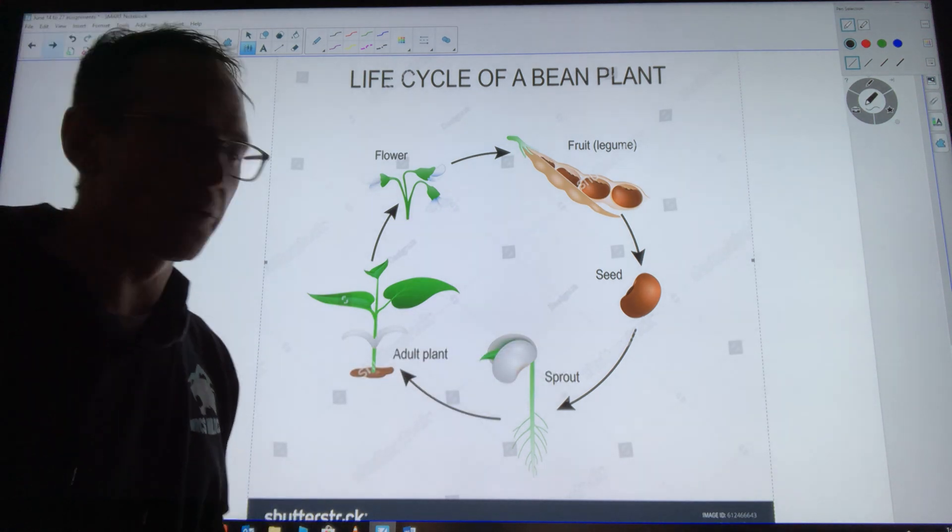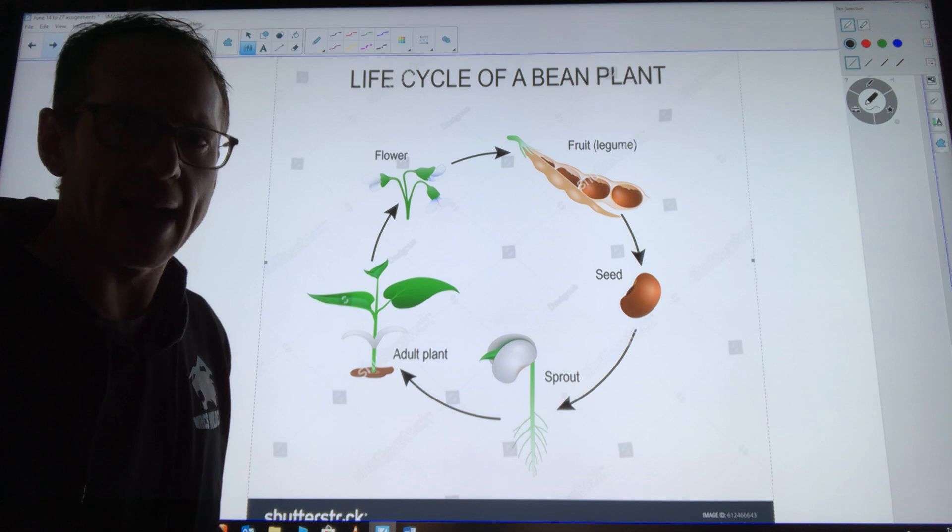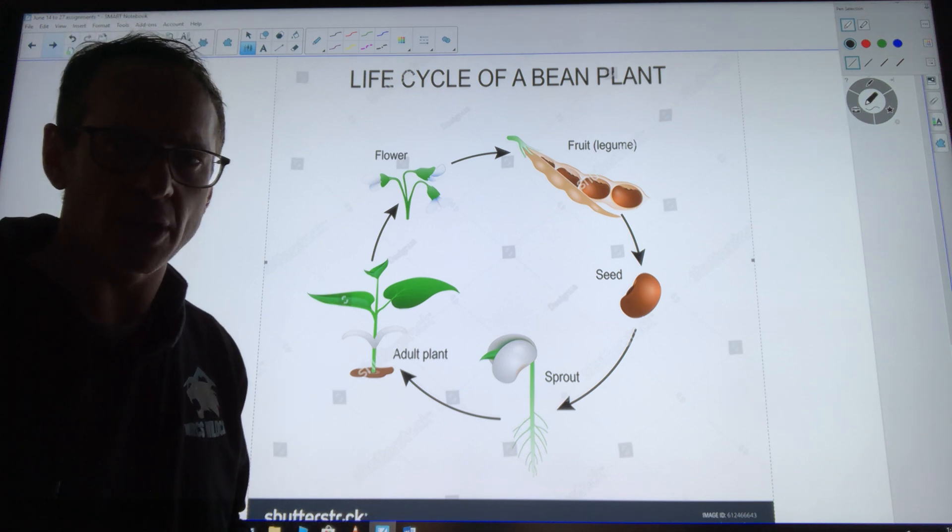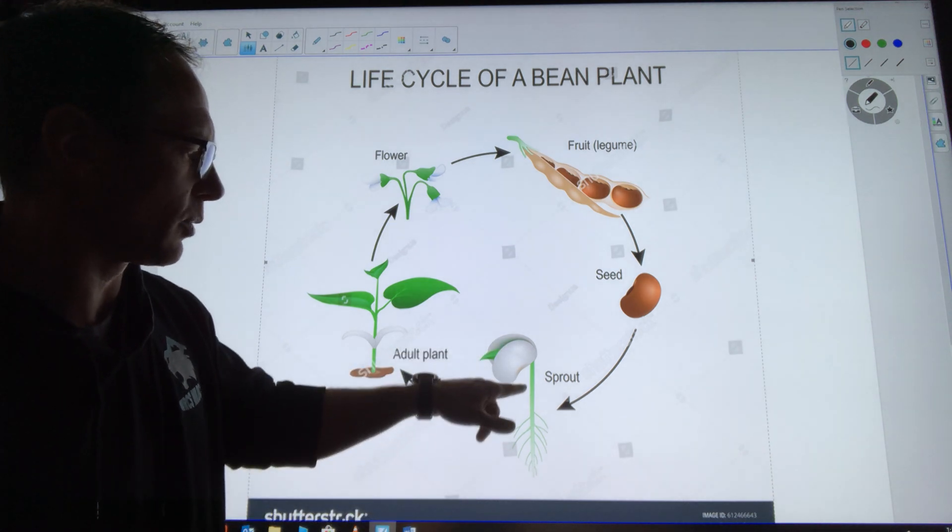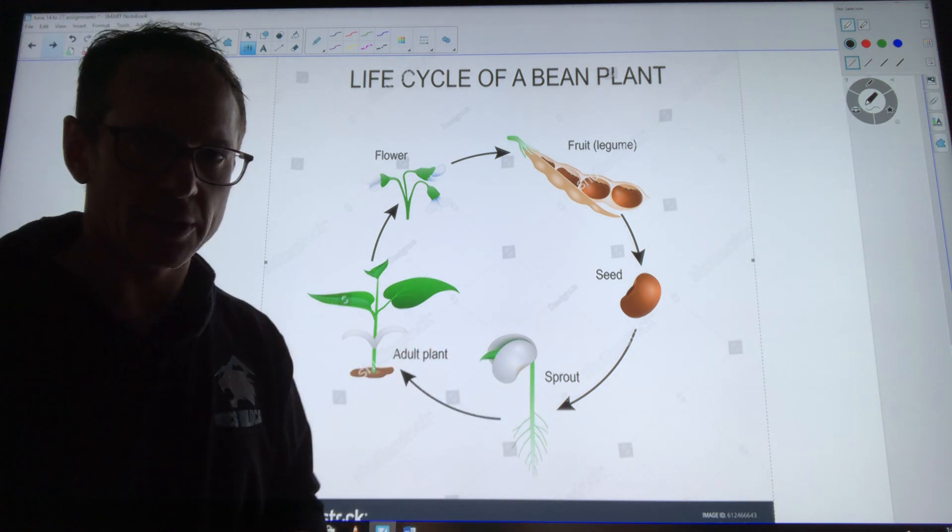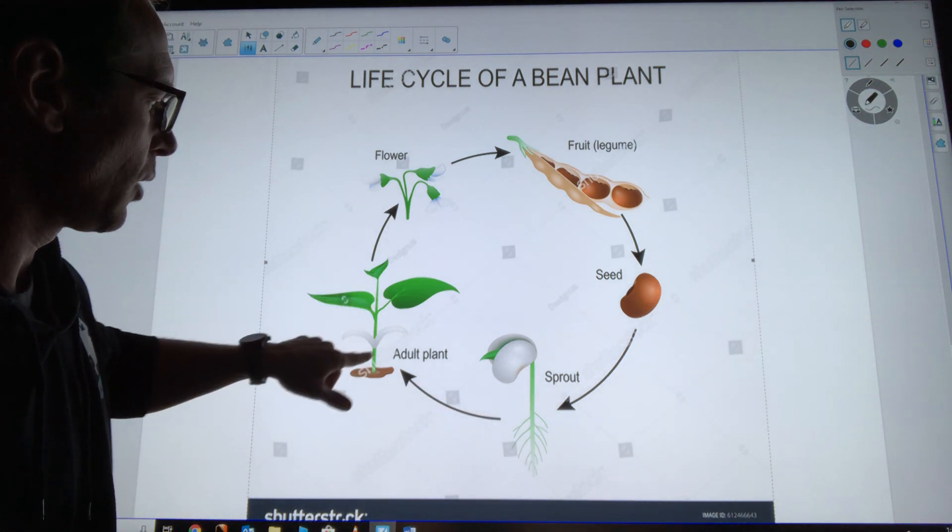is the roots grow first. We also saw that with our own bean seed plant as it's been growing - the first thing we saw was roots, and then once it started to break the surface with the stem, that's when we call it a sprout. Now as it starts to get larger and develop leaves we call that an